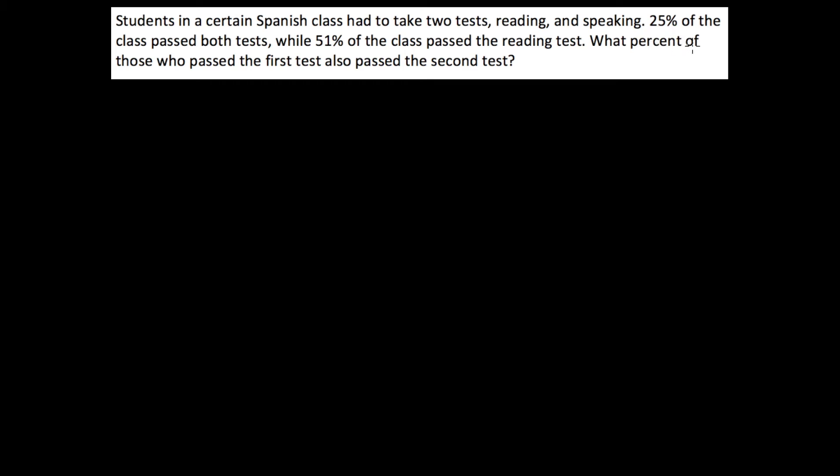25% of the class passed both tests, while 51% of the class passed the reading test. What percent of those who passed the first test also passed the second test? So if you may notice, in this question, we don't have the word given, which makes it a little tricky because we have to be clear about what event B is and what event A is in this formula.